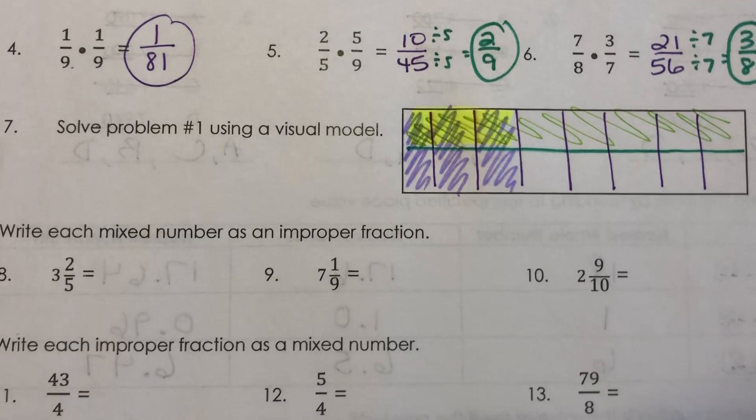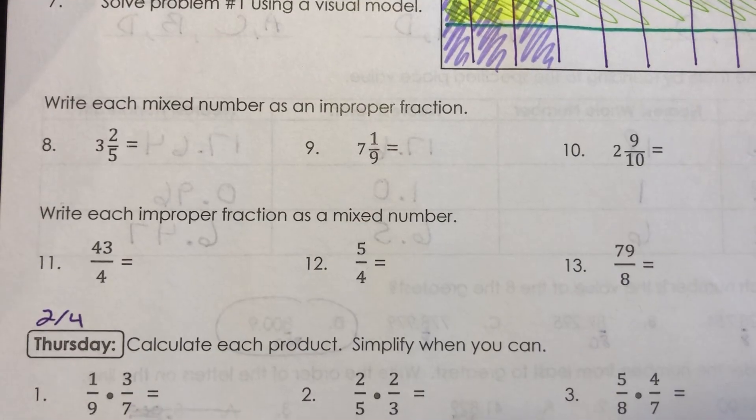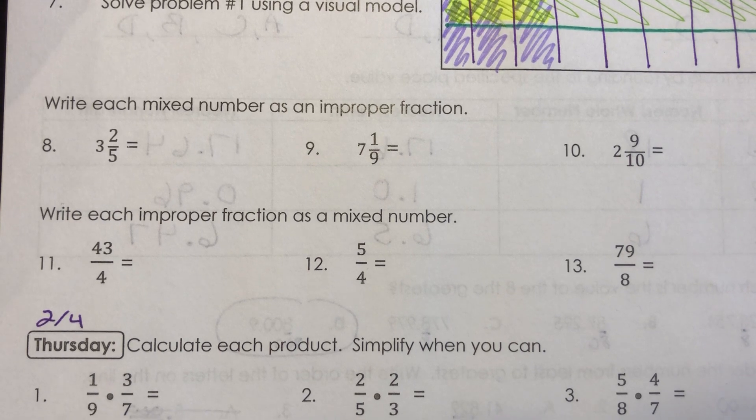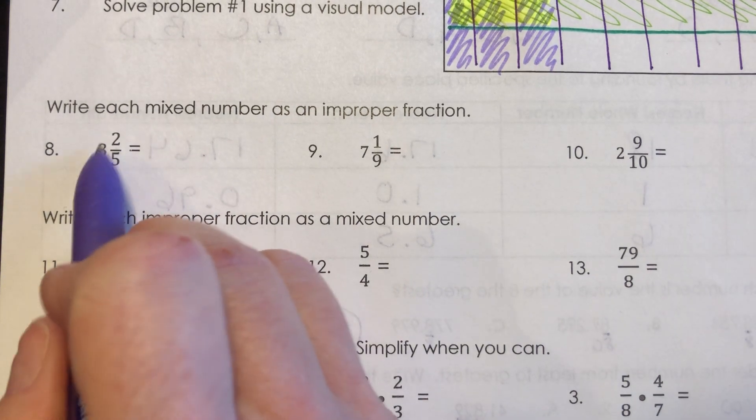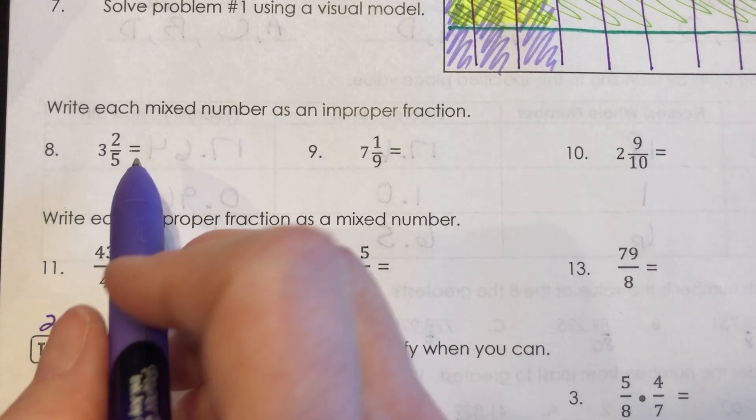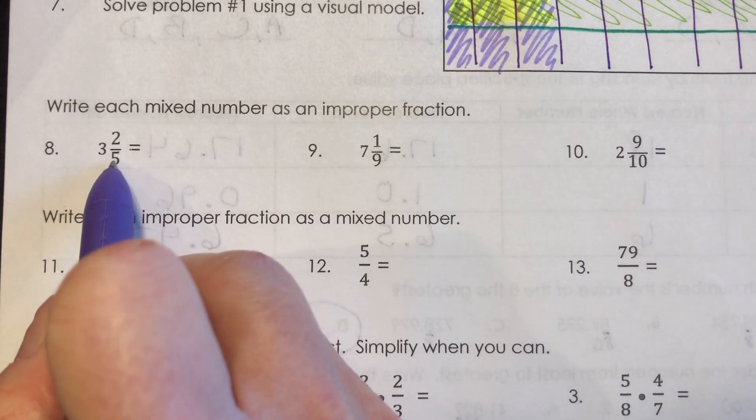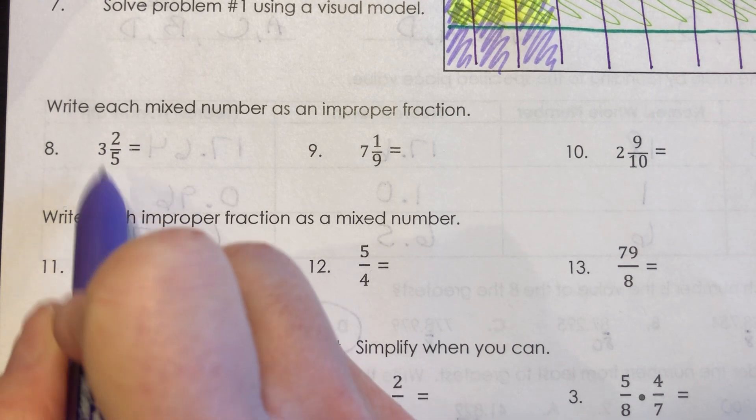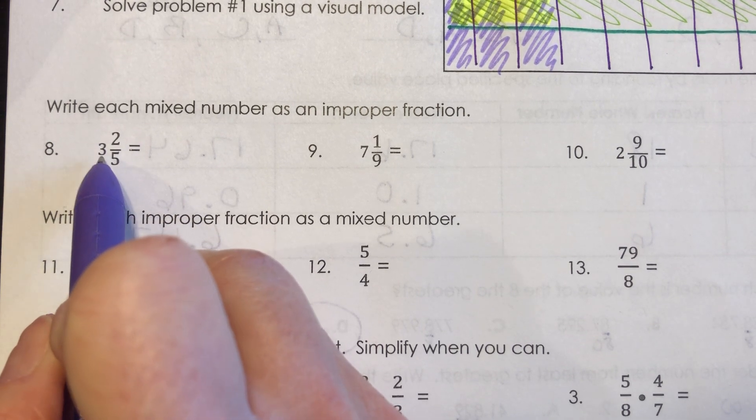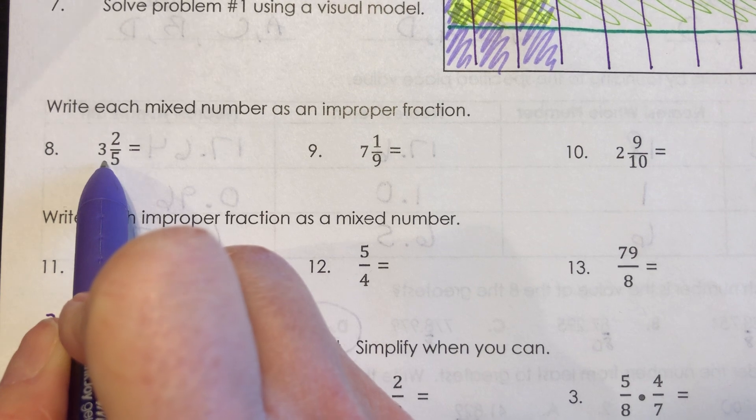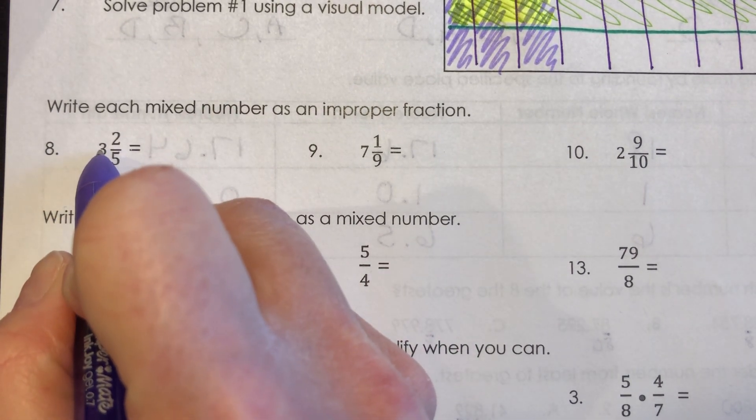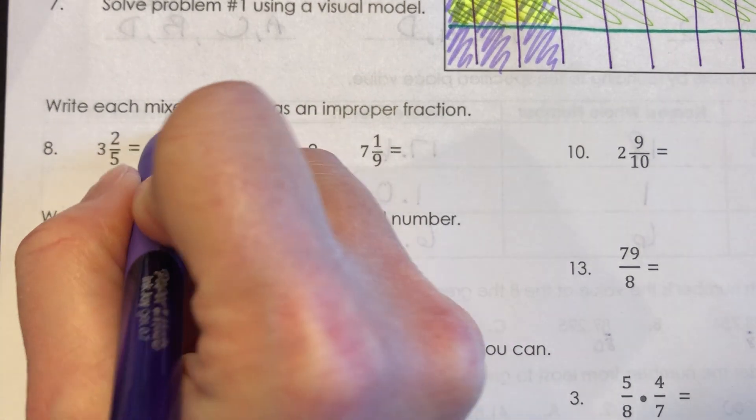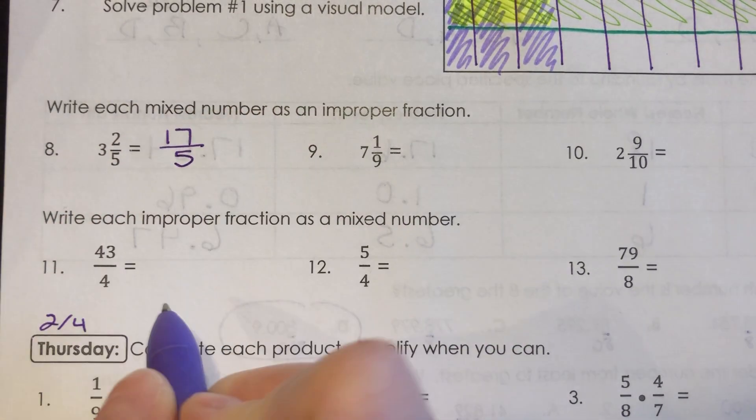Okay. Now a blast from the past, which is going to help us with lessons coming soon. I ask you to write each mixed number as an improper fraction. So I have 3 and 2 fifths. And remember, if I have 3 and 2 fifths, one whole would be 5 fifths, right? So if you have three wholes, that would mean 5 fifths, 5 fifths, 5 fifths. And we figured out that you could just do 5 times 3, which is 15, and add your two extra pieces, which is 17 fifths.